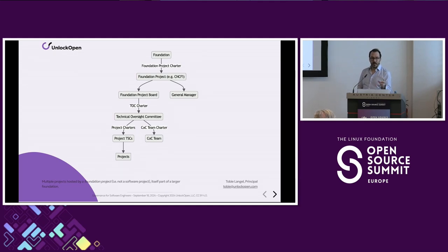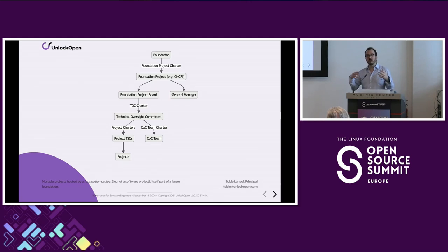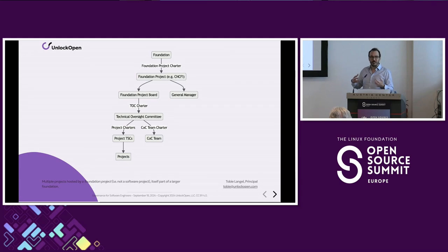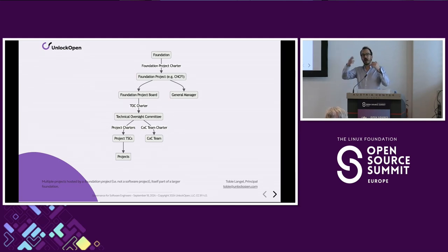Here's an even more complex but simplified example. Some foundations have foundation projects under them. For example, from a legal perspective, CNCF is not an independent foundation — it's a foundation project of the Linux Foundation. Such a foundation project can itself have a number of projects and have a technical oversight committee for all of these different projects. You see here this concept of delegation of power, of authority, through different documents, essentially going down.